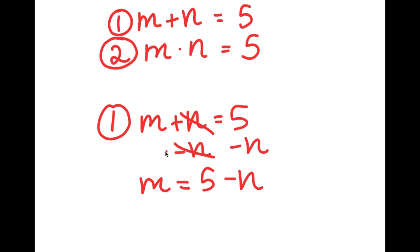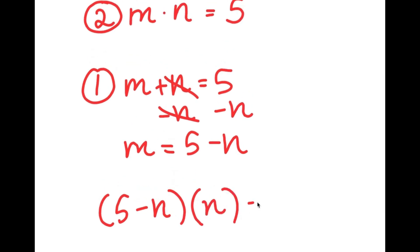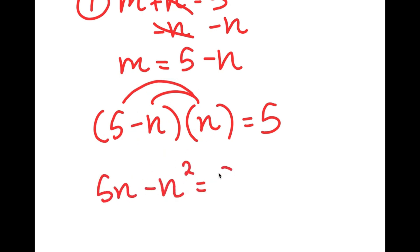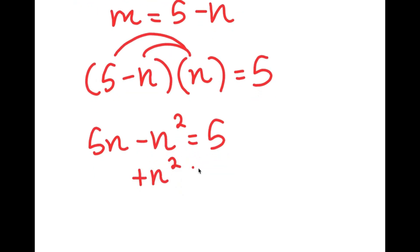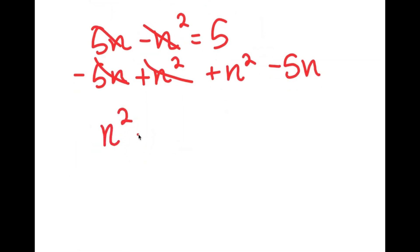I can substitute this value of m back into my original equation. If I substitute this back in, I get 5 minus n times n is equal to 5. I can distribute the n: 5 times n is 5n, and negative n times n is negative n squared, so this is equal to 5. I can add n squared on both sides and subtract 5n on both sides, and I get n squared minus 5n plus 5 is equal to 0.